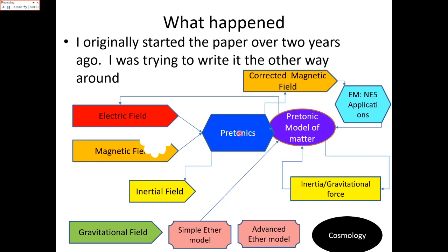So what happened in the past? I tried to explain this electrogravity going from what humankind already knew, trying to go down the rabbit hole to pre-tonics and the pre-tonic model of matter. The problem is we kind of had a little error in magnetism, and that caused a problem that eventually put a stop to the paper.